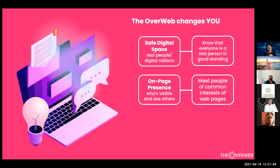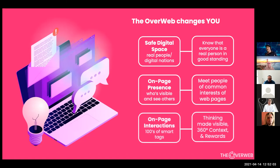You can see that certain people are going to the same websites, look at their profiles, and decide if you want to initiate a communication request. This is unprecedented — websites are ghost towns right now and you have no idea who's on them. The third element is on-page interaction: you get a collection of smart tags that you can attach to pieces of content on web pages. This makes thinking visible, creates the possibility of 360-degree context, and allows us to reward people for creating content that generates value in the ecosystem.